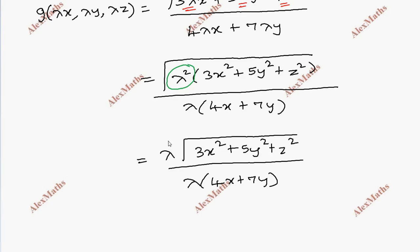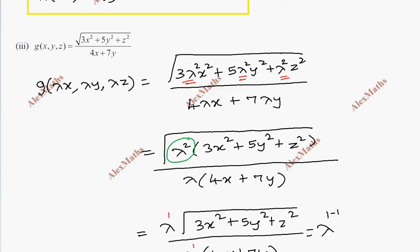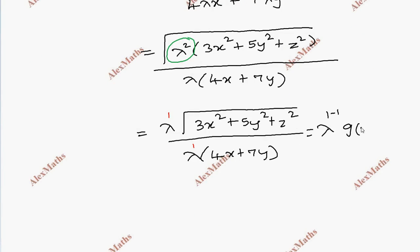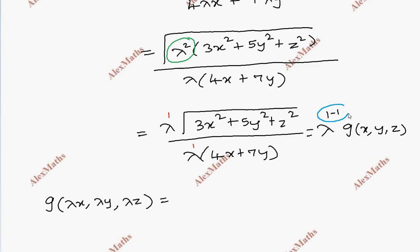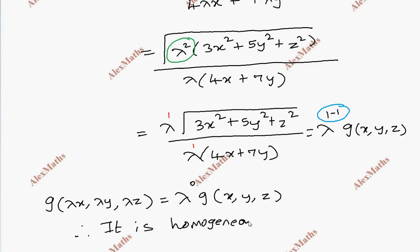The numerator has power 1 and the denominator has power 1, so lambda to the power 1 minus 1 equals lambda to the power 0. Therefore, G of lambda x, lambda y, lambda z equals lambda power 0 times G of x, y, z. It is a homogeneous function of degree 0.